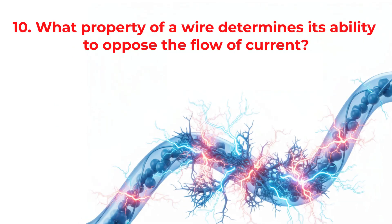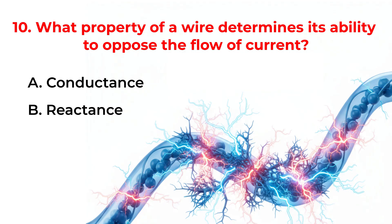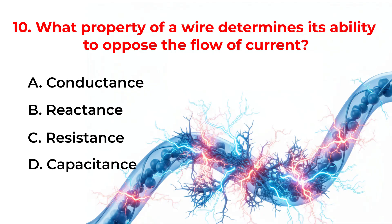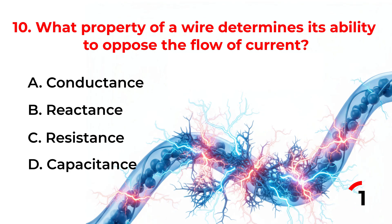What property of a wire determines its ability to oppose the flow of current? A. Conductance. B. Reactance. C. Resistance. D. Capacitance. Correct answer is option C. Resistance.